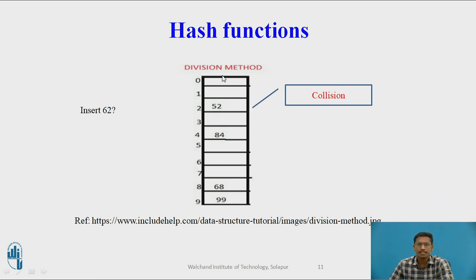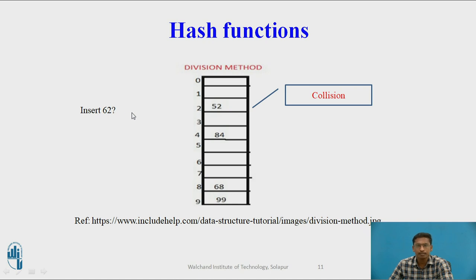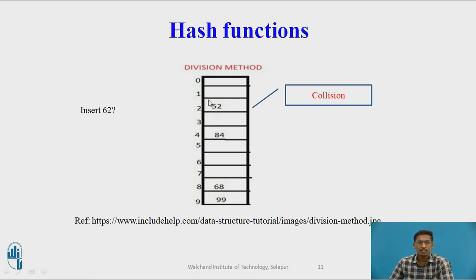This is an example using the previous hash table where 52, 84, 68, and 99 are already stored. Now suppose we want to insert a new element 62. Using the division method, 62 mod 10 generates output 2, so 62 should be stored at index 2. What happens is that at index 2, 52 is already present, so you cannot store 62 at index 2. This situation is called a collision — this is an example of a collision.